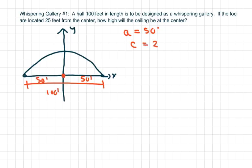My height is my B. So remember with ellipses, we do a squared minus B squared equals c squared. So a squared is 50 squared minus B squared—B is the height—so minus B squared equals 25 squared.